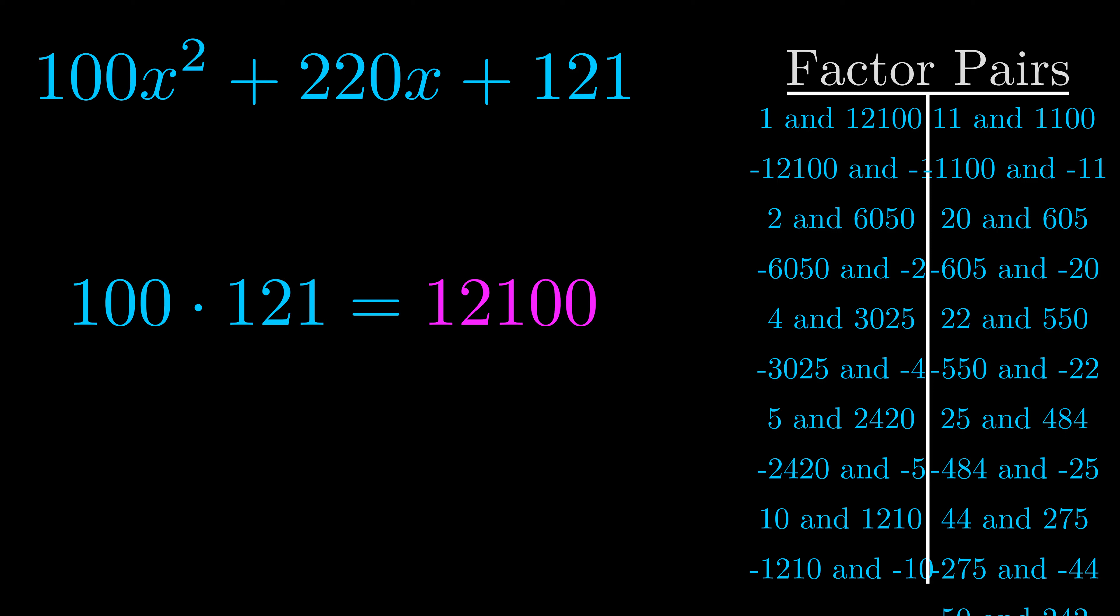The b value is the coefficient on the x term. That's the middle term, the one that we haven't done anything with yet. And really this is the only factor pair that we need.